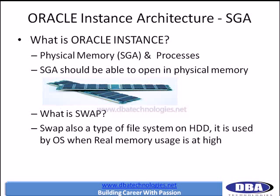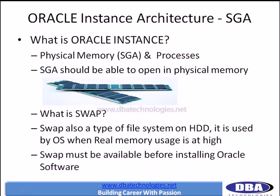We cannot install Oracle software without swap. The general rule is: how much swap should we create? Typically, double the RAM size — so if you have 8 GB RAM, create about 16 to 20 GB of swap. However, our SGA must be able to open only in physical memory; swap cannot be used for SGA. Swap must simply be available for Oracle software installation.